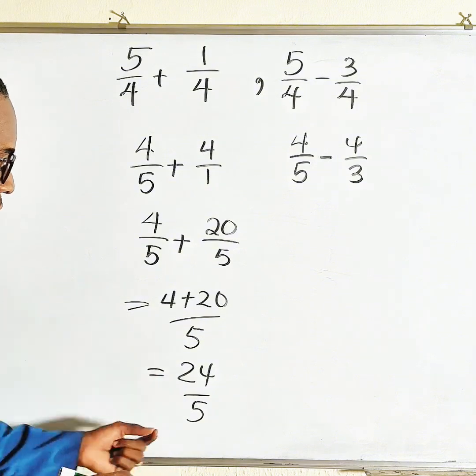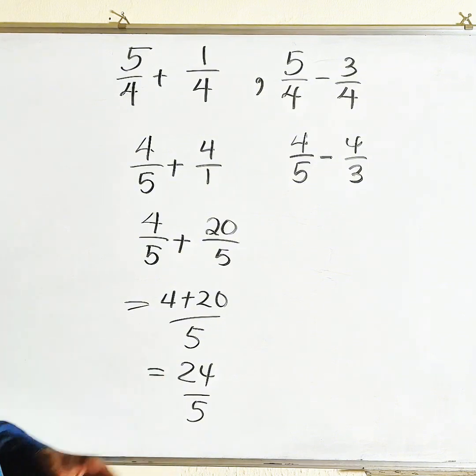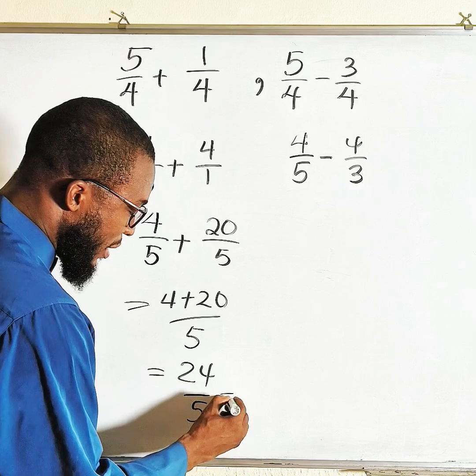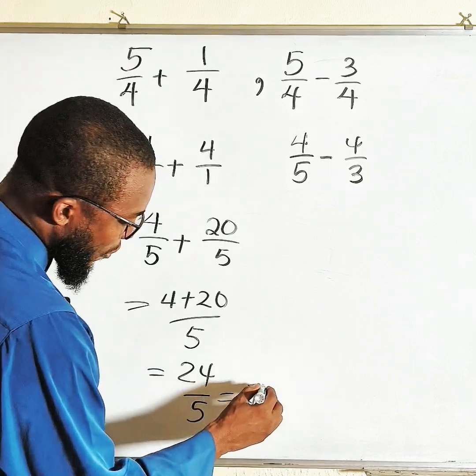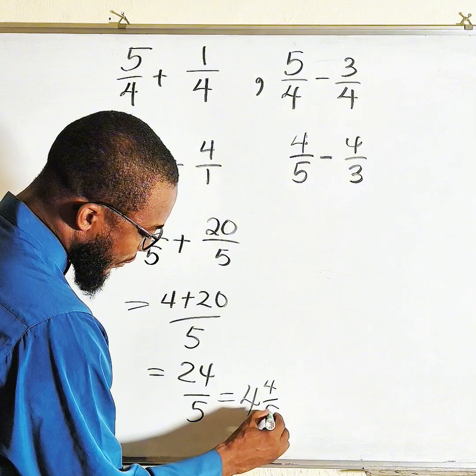This is not reducible except if you want to convert it to a mixed number. You count the number of times five can go into 24, which I believe is four times, which remains four out of five. This is a mixed number.